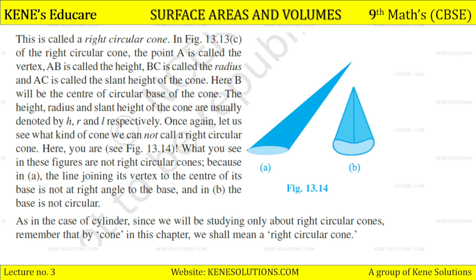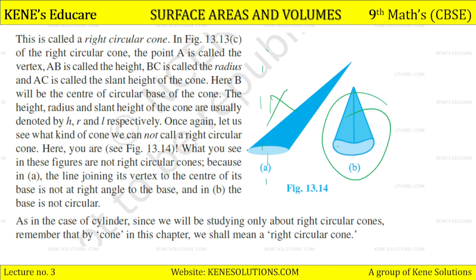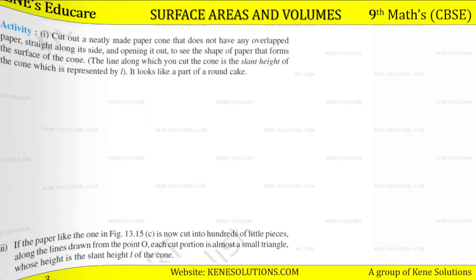Let us see what kind of cone we cannot call a right circular cone. What you see in these figures are not right circular cones — because here the vertex is not on the perpendicular line to the base, so it is not a right circular cone. Here the shape is different, the base is not circular. Since we will be studying only about right circular cones, remember that by 'cone' in this chapter we shall mean right circular cone.